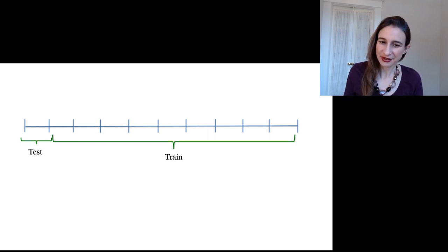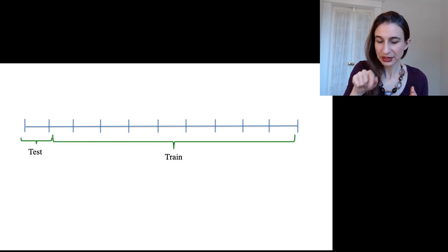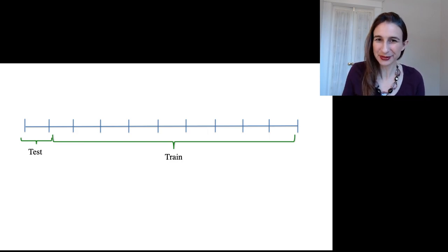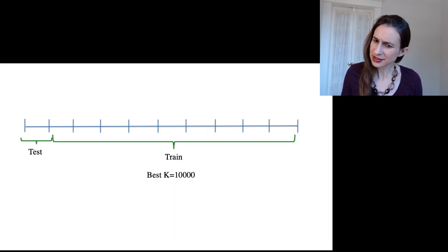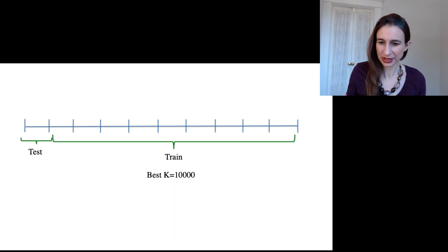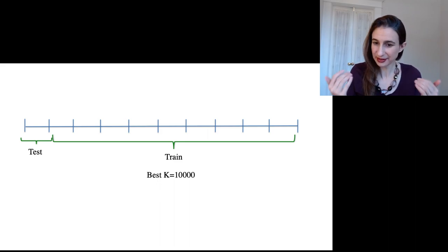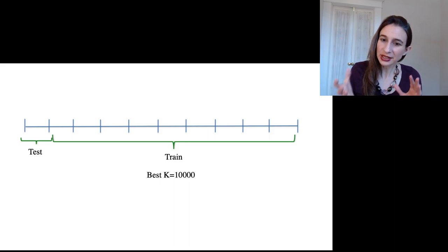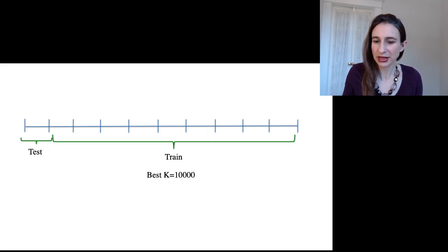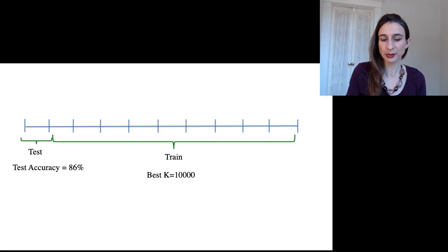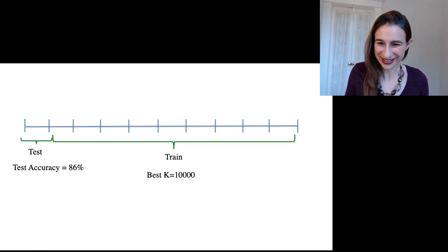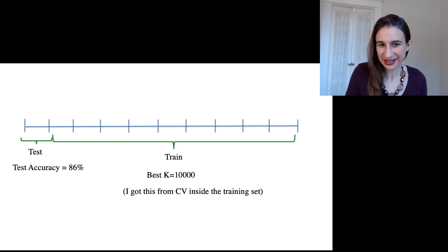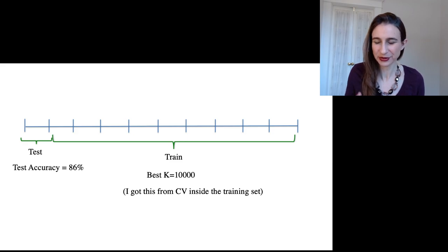Then you rotate which fold is the test set, and again, inside the training set, you do an internal loop choosing the parameter using cross-validation. Here you might find that the best k is 10,000 — different from the k equals 100 before, but that's okay, because you got that k from internal cross-validation. It could be that for this particular training set this value of k is the best. You're considering parameter tuning as part of the algorithm. So you take the best k of 10,000, train on the whole training set, evaluate on the test set, and get an accuracy of, say, 86%. That best k again came from internal cross-validation inside the training set.